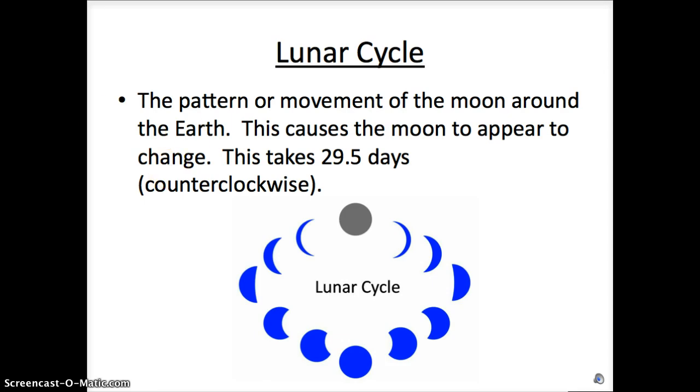Starting off with Lunar Cycle, this is a pattern or movement of the moon around the earth. This causes the moon to appear to change. This takes 29.5 days and repeats in a counter-clockwise pattern.